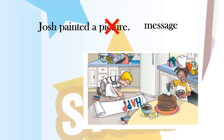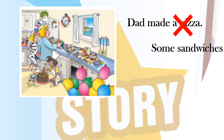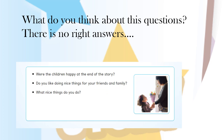Remember, if you need time to think, just pause your video. Dad made a pizza — what is wrong? Pizza was wrong. Dad made some sandwiches. Lily was angry — what is wrong? Angry is wrong. The correct answer is Lily was very happy. Now, were the children happy at the end of the story? Do you like doing nice things for your friends and family? What nice things do you do for them? Let's make someone happy today!